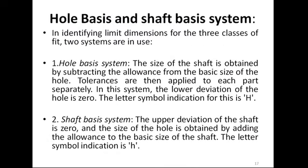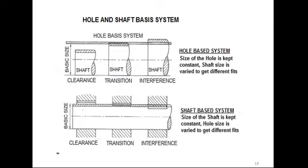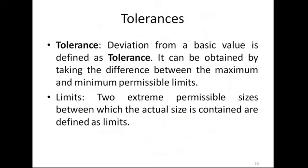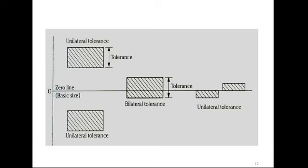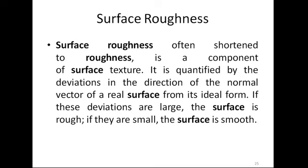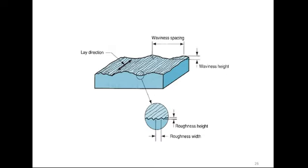In the previous lecture we also covered the hole basis and shaft basis system — what is meant by hole basis system and what is meant by shaft basis system, with examples. We also discussed tolerances and understood the meaning of tolerance using figures, then unilateral tolerance and bilateral tolerance. We then started surface roughness — what is its importance, why it is required, and what symbols are mentioned on a drawing.